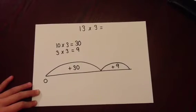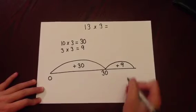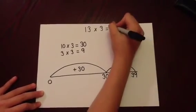So 0 add 30 is 30, and 30 add 9 is 39. The answer to 13 times 3 is 39.